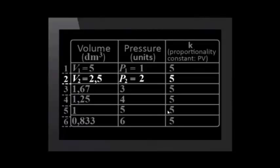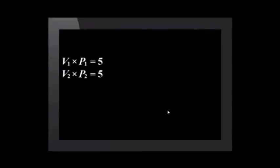We know from the table that the unit is decimeters cubed. Let's write this pattern in equation form. Let's call line 1's volume V1, and its pressure P1. We've seen that V1 times P1 equals 5 for this situation.